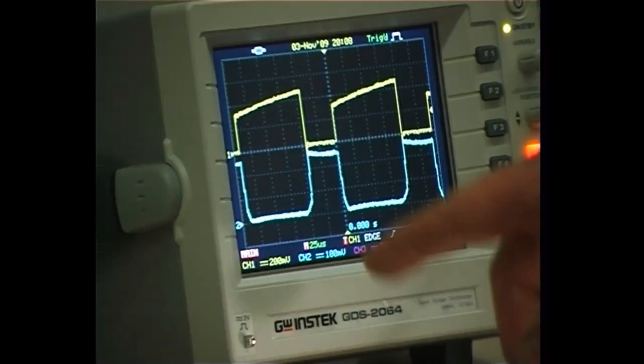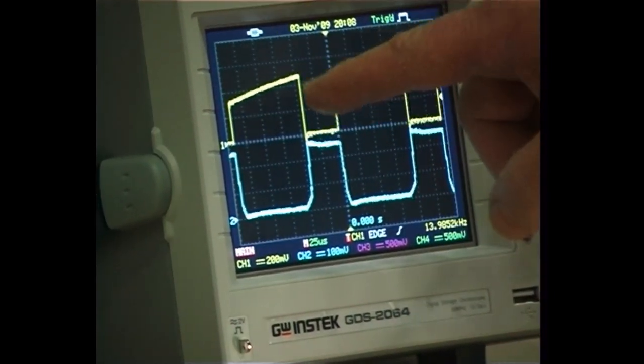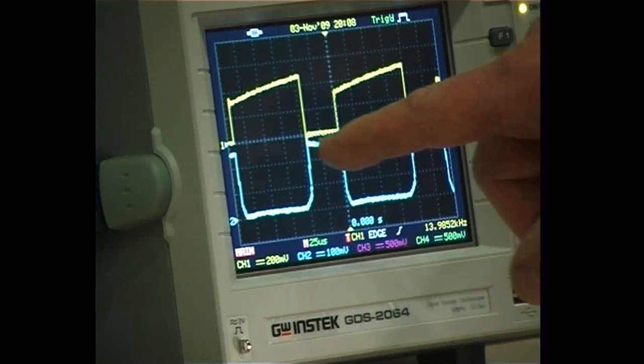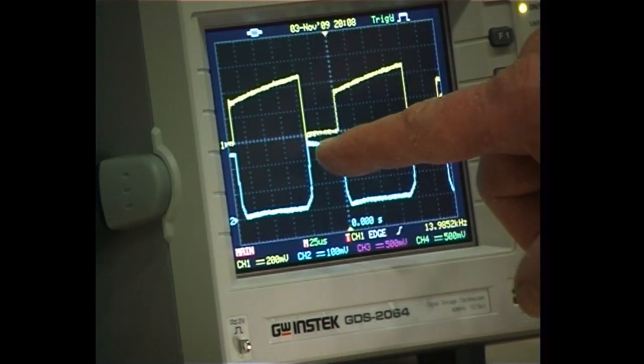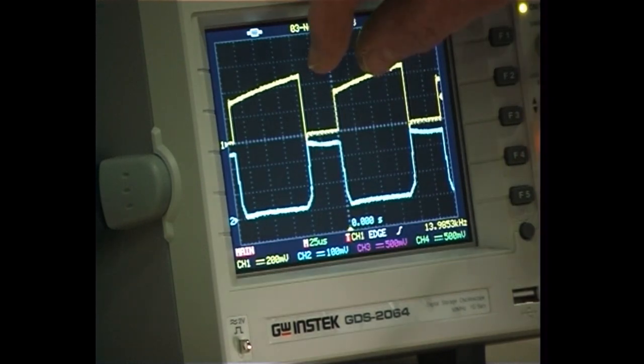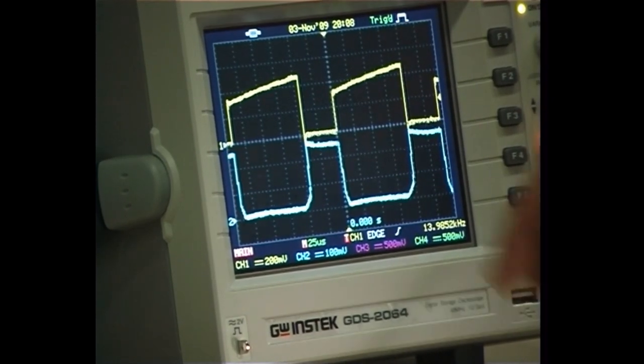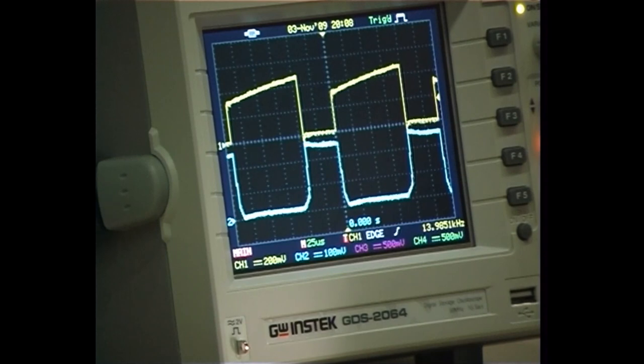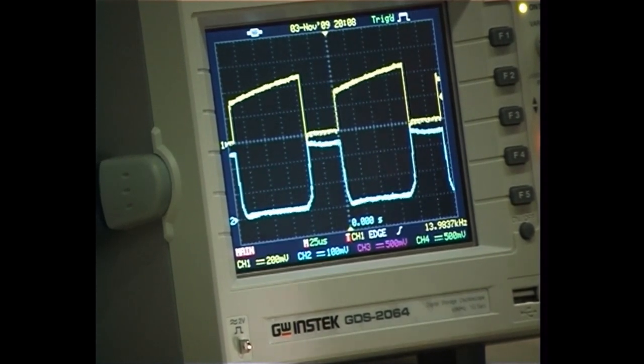When the volts are low on the MOSFET, the current is high in the load and in the MOSFET. When the volts are high on the MOSFET, the current drops back to zero. So we're taking a big chunk of current or voltage away from the load to reduce its average power.